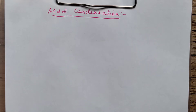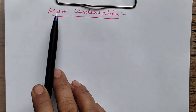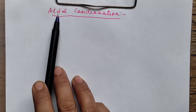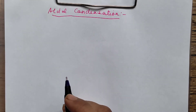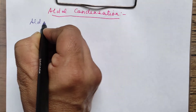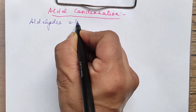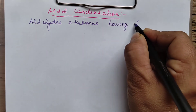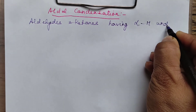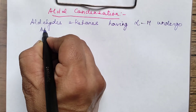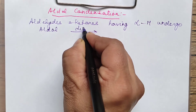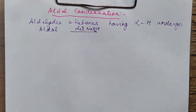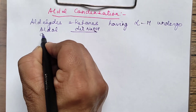Hello everyone, welcome to my channel. In today's session we will be discussing aldol condensation and cross aldol condensation. As the name itself says, aldol means the product is having aldehyde as well as alcohol. Aldehydes and ketones having alpha H undergo aldol condensation in the presence of dilute base — dilute NaOH.